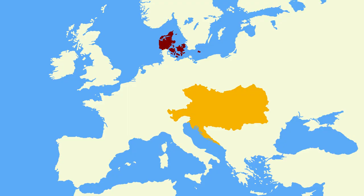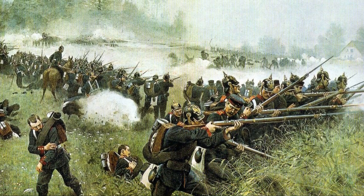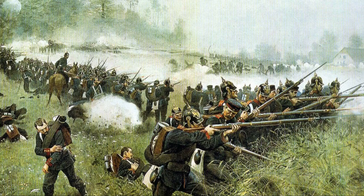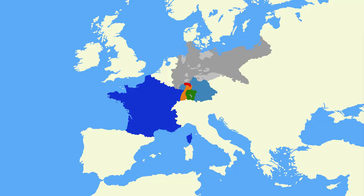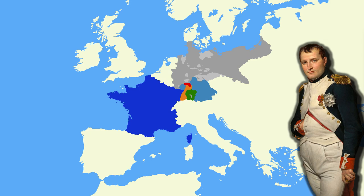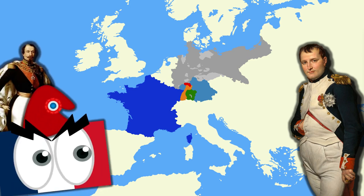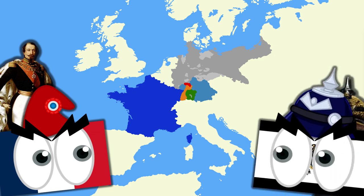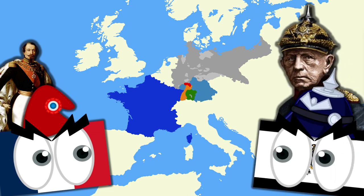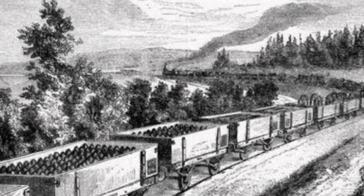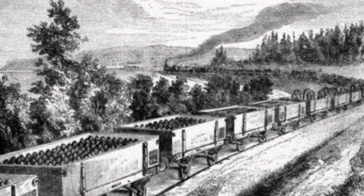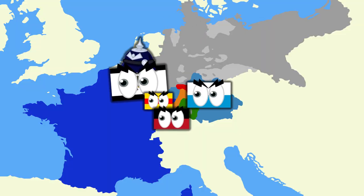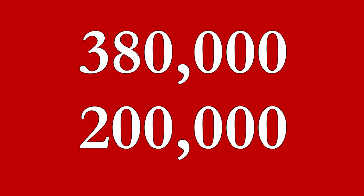Both France and the German allies wielded professional armies with industrial economies to support them, and each nation was initially confident that they could achieve victory. Napoleon III, echoing his uncle's actions sixty years earlier, led the French army personally. The German armies, on the other hand, were led by an experienced corps of officers, most notably von Moltke. The Prussians had also built an advanced system of railroads — a new innovation at the time — which allowed them to bring troops to the front lines much more quickly than the French. As a result, they outnumbered them by nearly two to one.